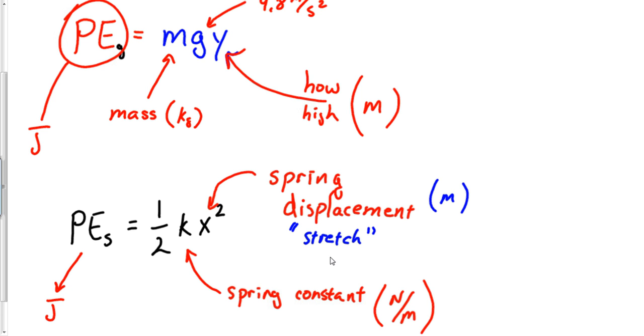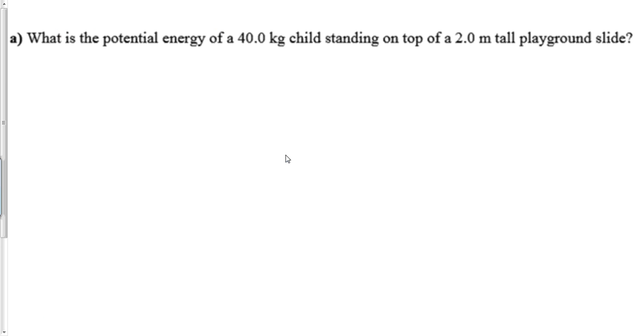It's going to be measured in meters. What kind of goofs y'all up is it's very common for a problem to give you two measurements of a spring. Say that a spring is 0.2 meters long, and then somebody grabs hold of the spring and now it's 0.46 meters long. X is just going to be that difference, which in this case would be 0.26, and that would be your X for the problems.